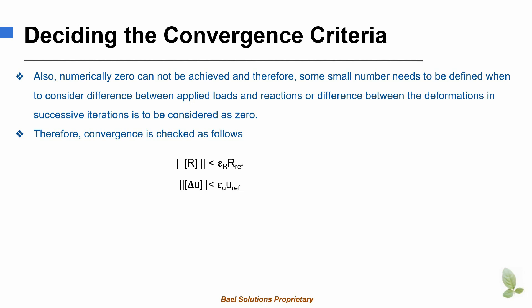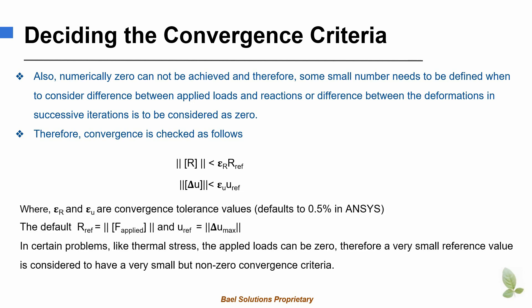In this case, epsilon R or epsilon U are the force and the deformation convergence tolerance, respectively. ANSYS default for these convergence tolerance is half a percent.